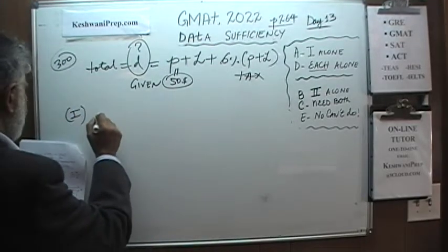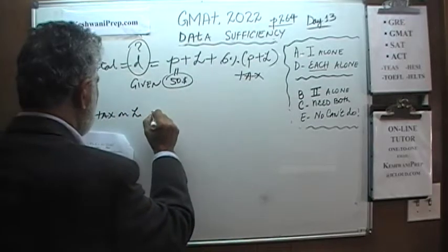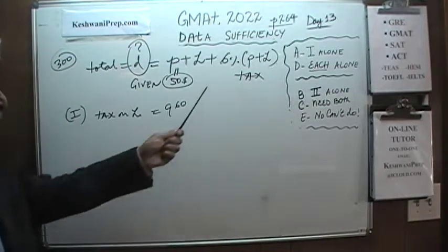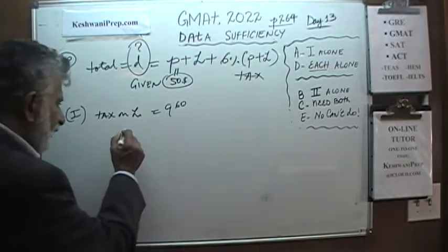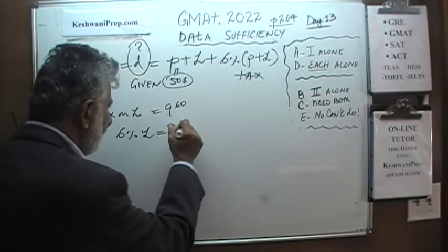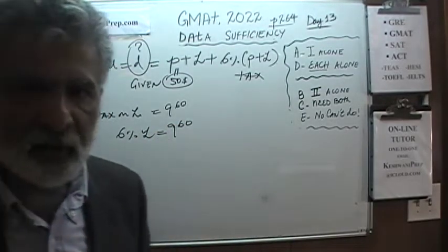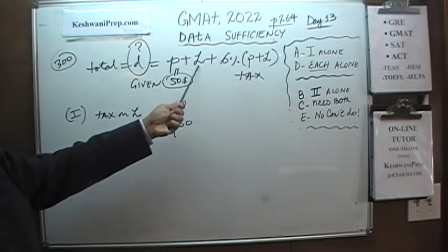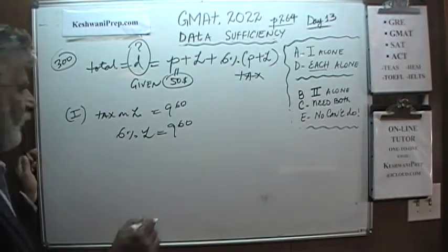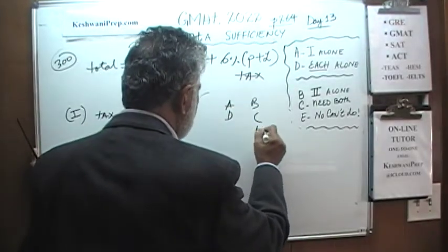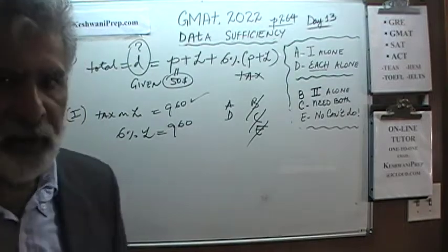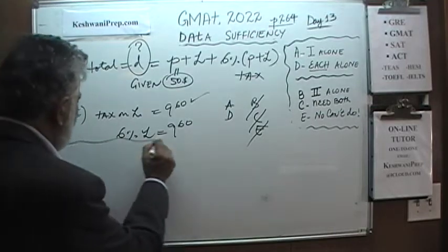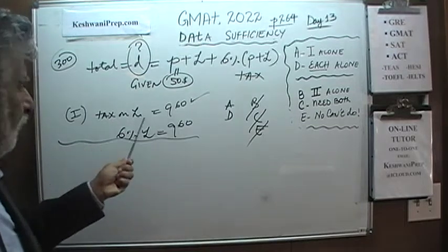The first statement tells us that the tax on labor was $9.60. Since the tax is 6% on labor, that means 6% of L equals $9.60, so we can figure out L. Once we know L and we already know parts are $50, we can put everything back into the equation and figure out D. The first statement is quite enough. Do not make the mistake of actually solving it — nobody is asking for the exact number. The question is: do we have sufficient data? The answer is yes — statement 1 provides sufficient data.